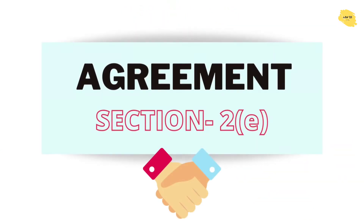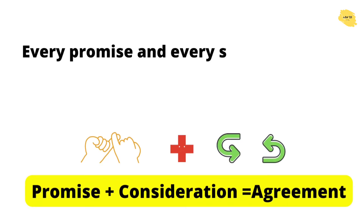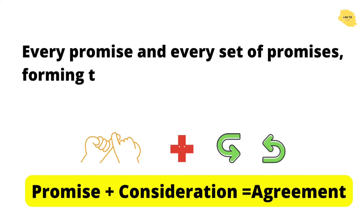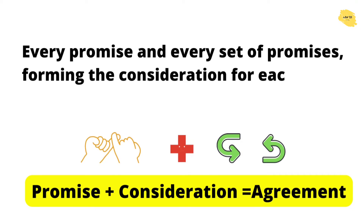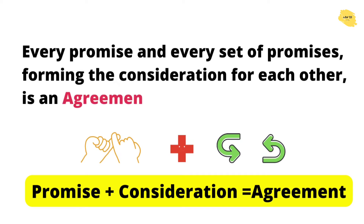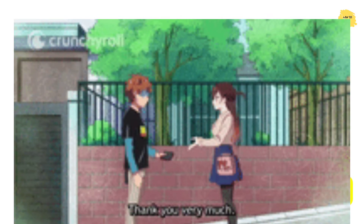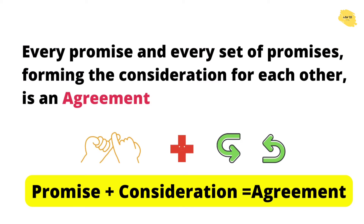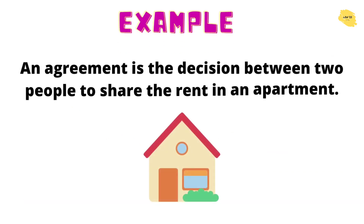Next comes agreement, Section 2(e). When any consideration and promise come together, they form an agreement. For example, a proposal when accepted becomes a promise. Say one person tells another: I have a rent apartment and I'm searching for a partner — will you be my partner? The other person says yes. That is the promise. Then if both agree to invest 50,000 rupees each, that becomes the consideration. When promise and consideration both come together, they form an agreement, which is enforceable by law — meaning if there is any problem, you can go to court.